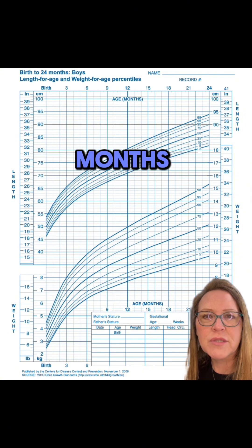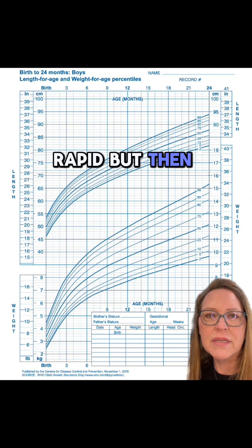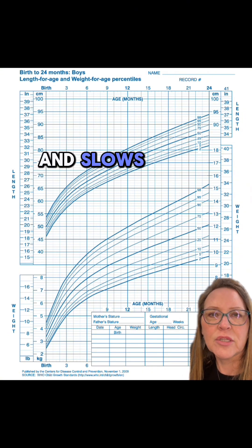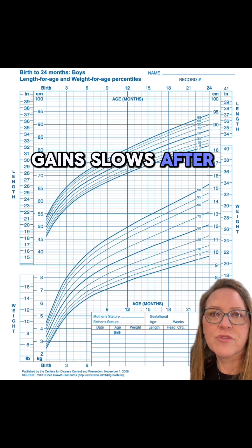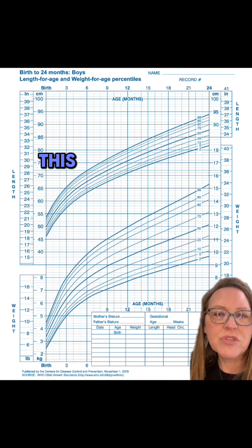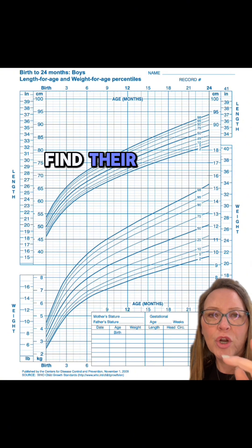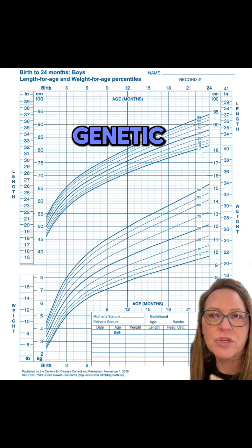You'll notice that in the first three to four months, growth is really rapid, but then it tapers off and slows down, and their weight gain slows after about four to six months. This early period is when children find their curve, meaning they're settling into their genetic growth potential.